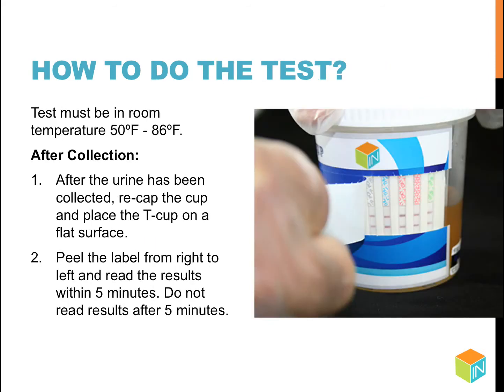Tests must be at room temperature, 50 to 86 degrees Fahrenheit. After the urine has been collected, recap the cup and place it on a flat surface. Peel the label from right to left and read the results within 5 minutes. Do not read the results after 5 minutes.